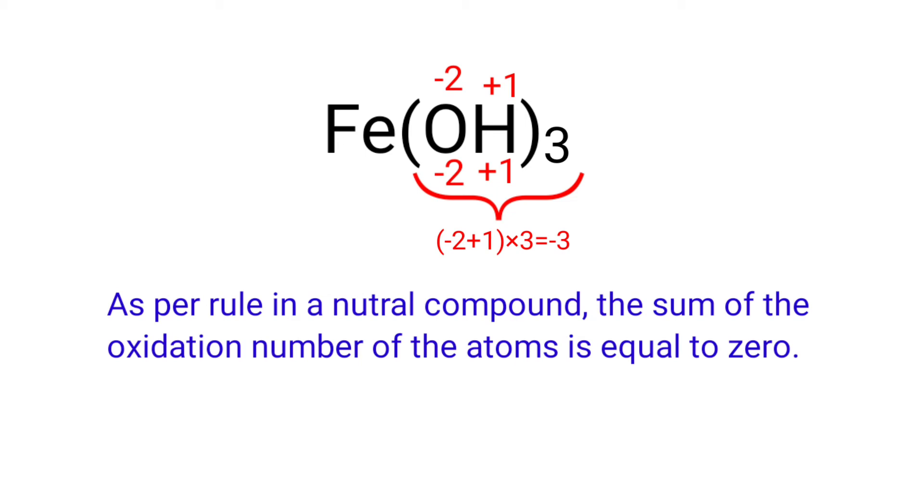So the number under Fe must be plus 3. So we can write the oxidation number of the iron is plus 3.